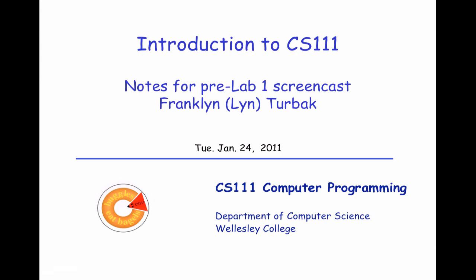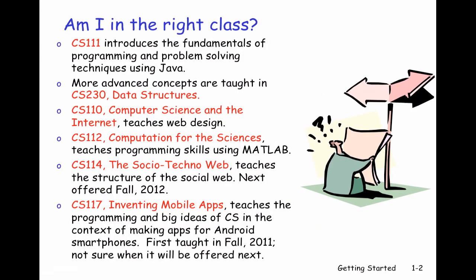The first thing we want to do is to make sure that you are in the right class. We have several introductory computer science classes, and they do different things. CS111 is an introduction to programming and problem solving, and in this class we do a lot of programming. This class is the introduction to the computer science major. If you're planning to take more courses in computer science, this is the right course for you. About half the people who take this course do not go on to take other courses, and that's perfectly fine.